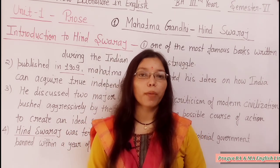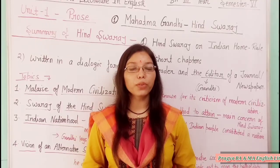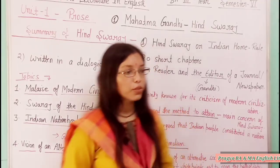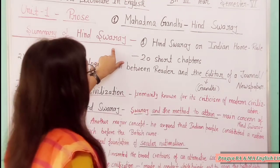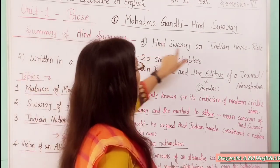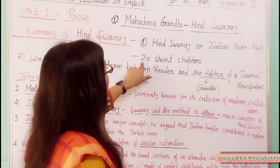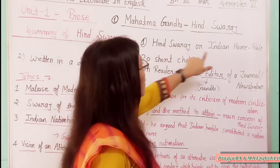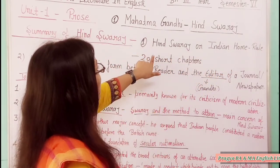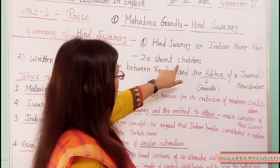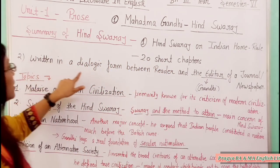Now let's look at the summary of Hind Swaraj. You can see here on the whiteboard: Summary of Hind Swaraj. Number one point: Hind Swaraj, also known as Indian Home Rule, contains a total of 20 short chapters.